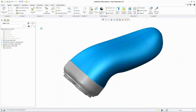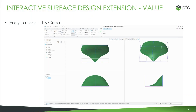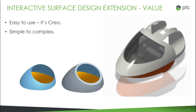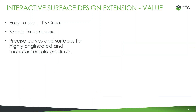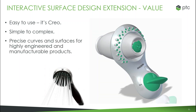So some of the value ISDX brings: number one, it's easy to use — setting up images on planes as a guide, creating curves, and viewing them in four views to see every angle. It allows you to start with something simple and take it to the complex: beginning with basic 2D images and curves, building surfaces, then modifying them until you reach the final end product. You get precise curves and surfaces for highly engineered and manufacturable products, with the freedom to click and drag points and edit shapes as needed.